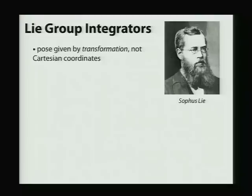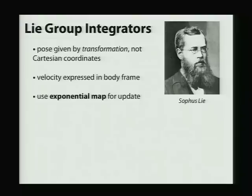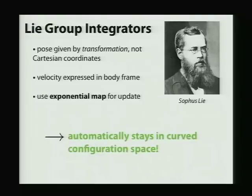We're always going to express our velocities in a body frame. And we're going to use something called the exponential map to update the system. And the reason we do this is just like in the pendulum, we're automatically going to stay in the curved configuration space of our system. We don't have to worry about any sorts of projection after the fact.